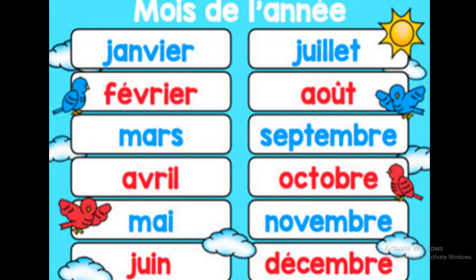Now, months of the year: January, February, mars, avril, may, juay, juay, oon, septumbra, octubra, novembra, disumbra.